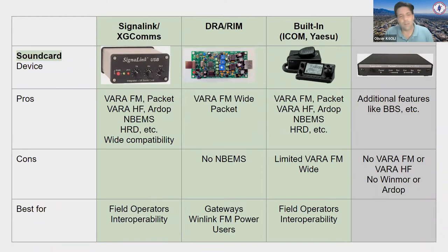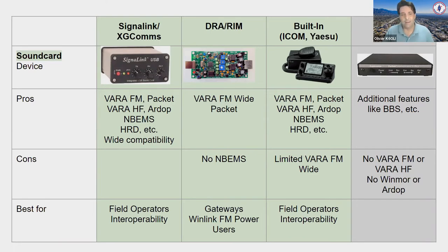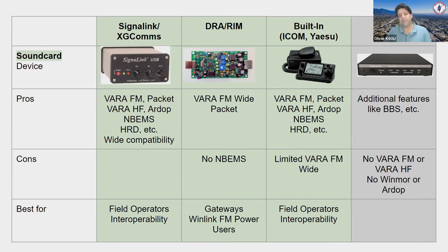For hardware basics, a lot of people have SignalLinks — if you have one, you're good to go. There's debate about red vs. black transformers, but it's a bit off the beaten path. A SignalLink works with VARA-FM, Packet, VARA-HF, RDOP, and Nbeams. It's best for field operators who want interoperability. The other popular option is DRA and RIM boards, which support VARA-FM wide and Packet. They work really well attached to gateways, but making field adjustments is more complicated.